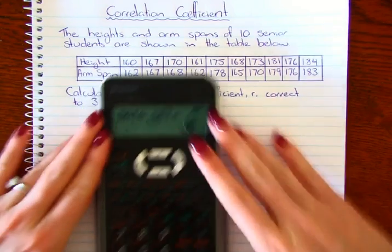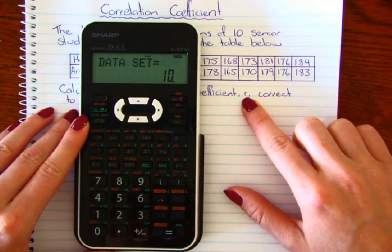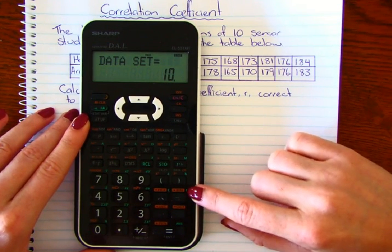Alright, so to calculate the correlation coefficient now, we know that it's represented by the letter R. On your calculator, that's just above your division key. It's written in green.